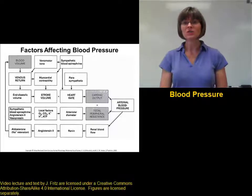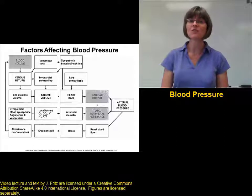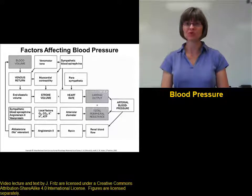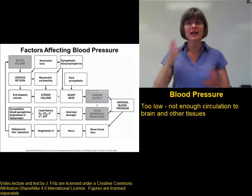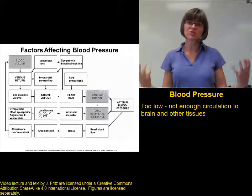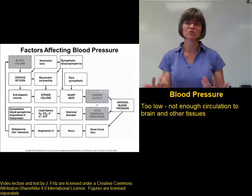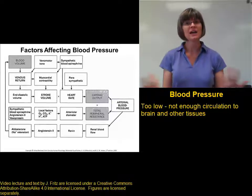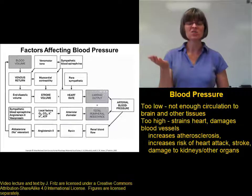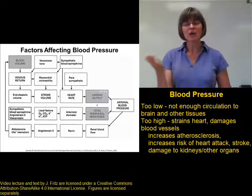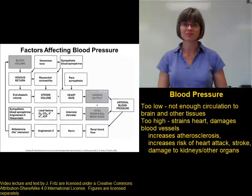One of the most important functions of your circulatory system is regulation of blood pressure. It's important that your blood pressure is high enough to get blood to the brain, and also to circulate adequate blood out to all of the other tissues in order to deliver oxygen and nutrients, and to get rid of waste. But it's also important that the blood pressure is not too high. High blood pressure strains the heart, and it can also damage the blood vessels.